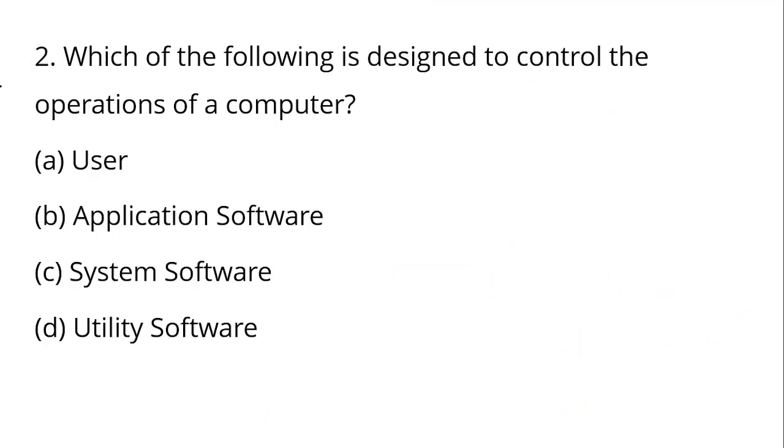Question number two: Which of the following is designed to control the operations of a computer? Control the operation means to control input, output, process, execute. Options are: User, Application Software, System Software, or Utility Software. The right answer is System Software. Computer operations are controlled by System Software design.